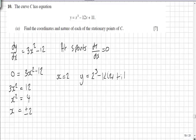So in the first instance, when x is 2, y is going to equal 2³, which is 8, minus 12 times 2, which is 24, plus 11. That gives us a value of -5.